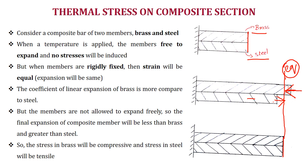For the combination of thermal stress and composite sections, two materials are considered: brass and steel. When temperature is increased, brass has a higher expansion than steel because brass has a higher coefficient of linear expansion. When these two materials are joined by a rigid plate, they act as a single element and must have an equivalent expansion. To attain this equivalent expansion, brass should carry a compressive load and steel should carry a tensile load.